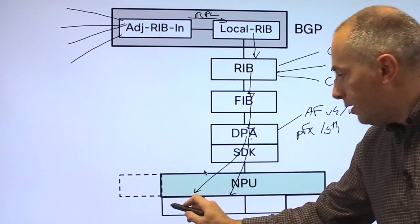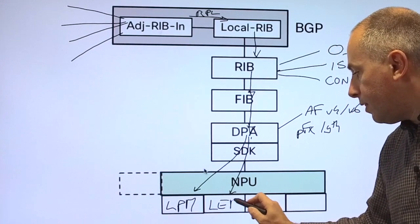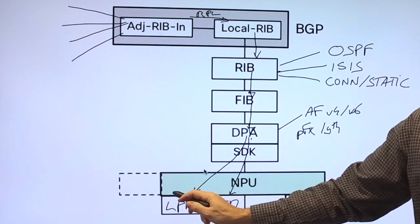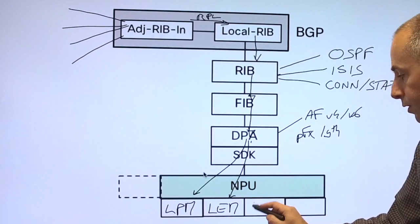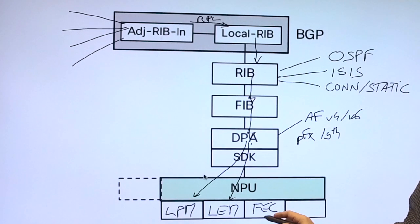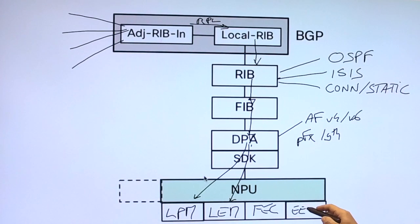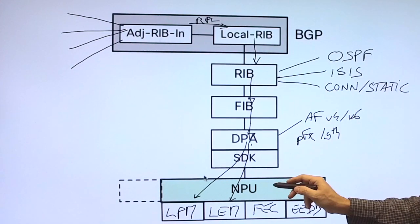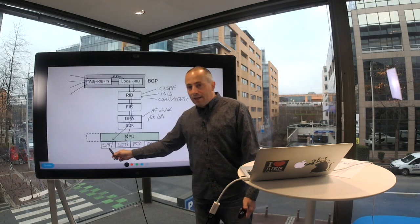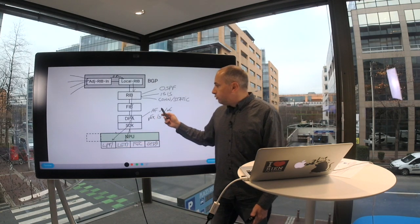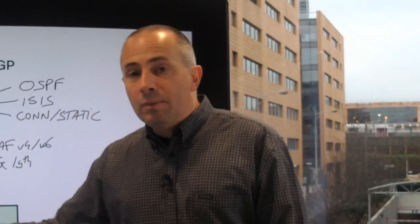The DPA uses prefix length to decide where the route should be stored inside the forwarding ASIC. We will have different databases: the LPM, the LEM, and in some other line cards the external TCAM. That's where the prefixes are stored, along with next-hop information, load balancing information, and the encapsulation database. So it's going to be very important to leverage the different sizes of these databases, and to do so we will use the different prefixes and prefix lengths to optimize the distribution.